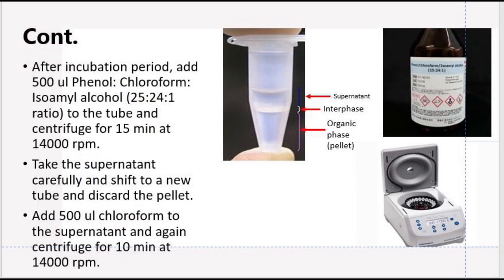After the incubation, add 500 microliter phenol chloroform isoamyl alcohol solution in the eppendorf tube and centrifuge it at 14,000 rpm for 15 minutes.